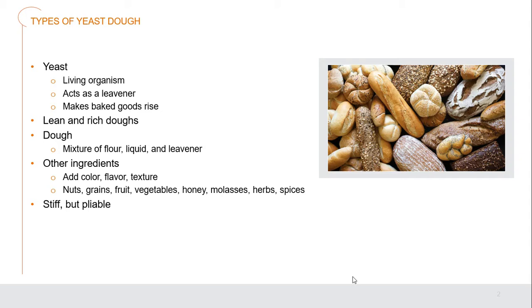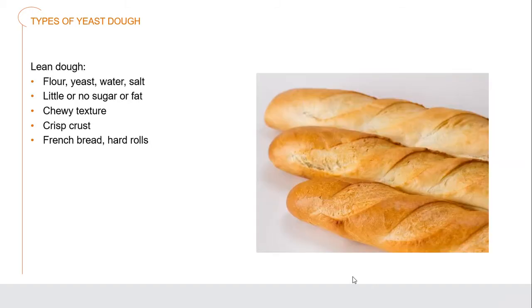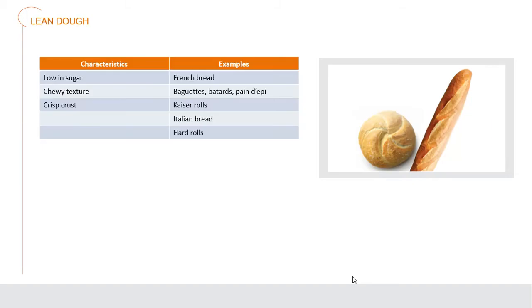Lean dough generally just has flour, yeast, water, and salt to taste — no sugar or fat added. It normally has a chewy texture with a crisp crust. Things like French bread have that crisp crust on the outside and chewy texture inside, as do various hard rolls. Lean dough characteristics: low in sugar, chewy texture, crisp crust. Examples include French bread, baguettes, batards, pandepi, kaiser rolls, Italian bread, and hard rolls.